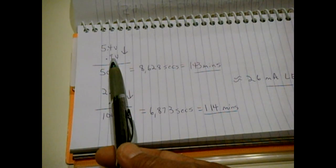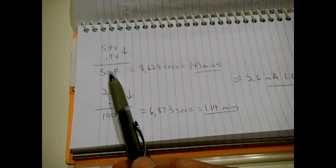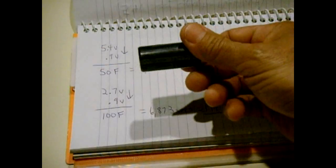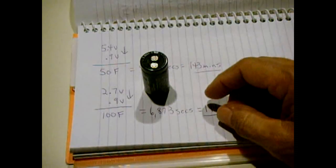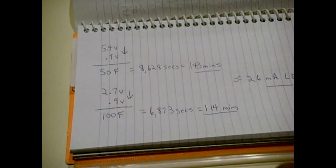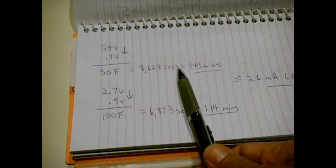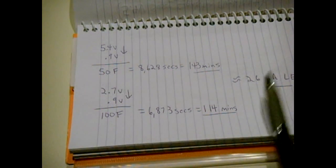Using an online supercapacitor discharge calculator, it comes out to using a 50 farad capacitor because each one of these is 100. You put two together, now you have higher voltage half the capacitance. So the 100 becomes 50. That will yield around 8,628 seconds of light, around 26 milliamps going to the LED.